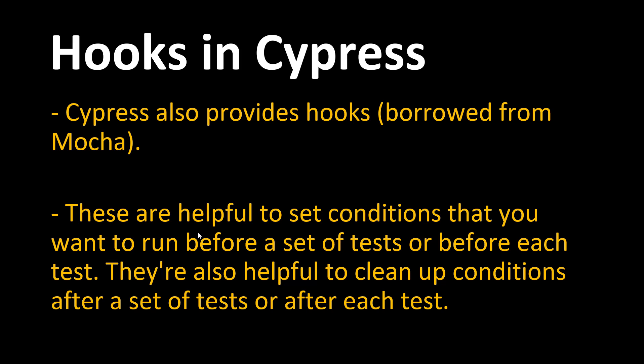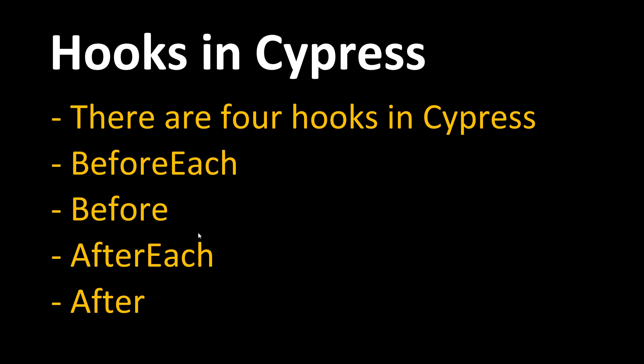There are four hooks in Cypress. The first one is 'before each', then we have 'before', then 'after each', and finally 'after'. 'Before each' is used when we need to run any condition, test, or configuration before each test — it will run against each test in your Cypress suite.